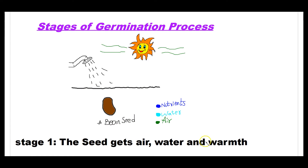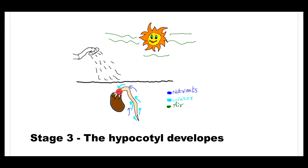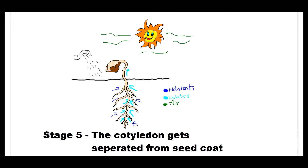So in the first stage of germination, the seed gets air, water, and warmth. The second stage: the seed coat breaks and the radicle emerges — here the seed coat breaks and the radicle comes out. Stage 3: the hypocotyl develops from the seed. Stage 4: roots are developed. Stage 5: the cotyledon gets separated from the seed coat — this brown color is the seed coat, and this is the cotyledon coming out of the seed coat.